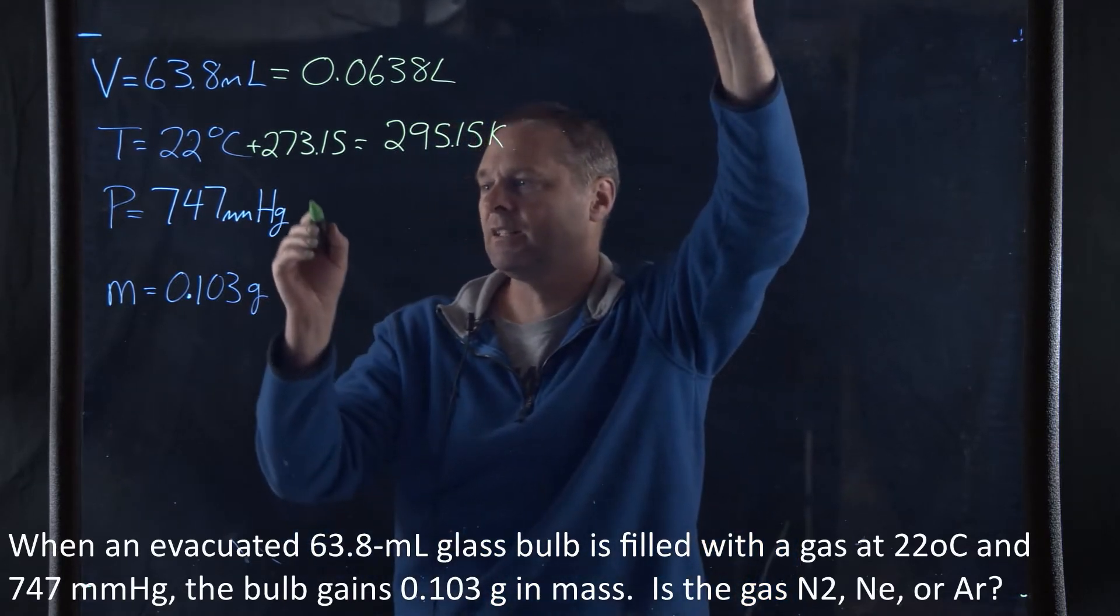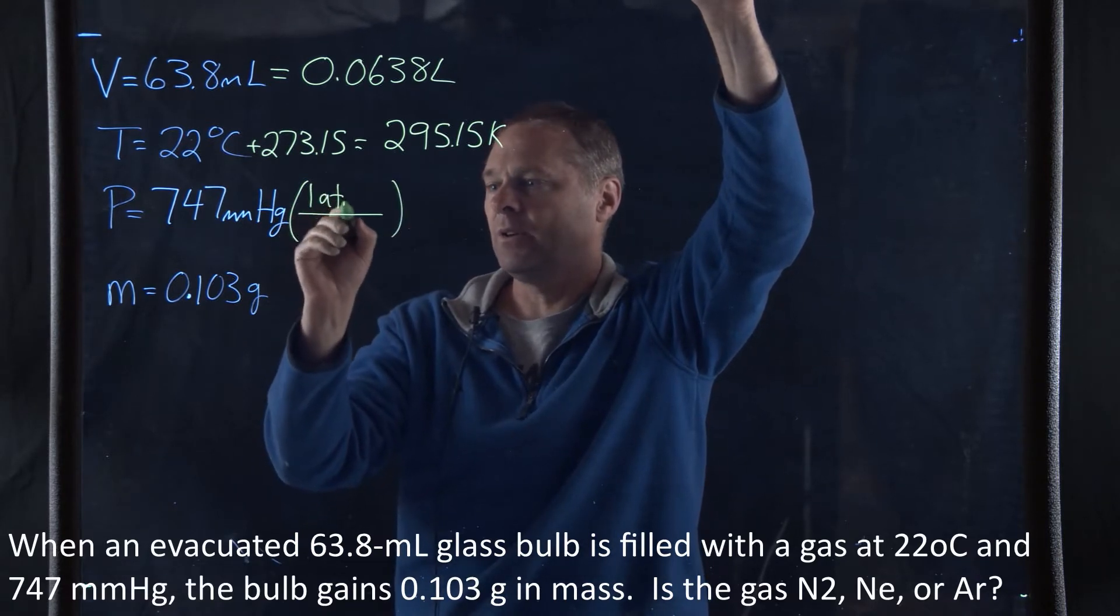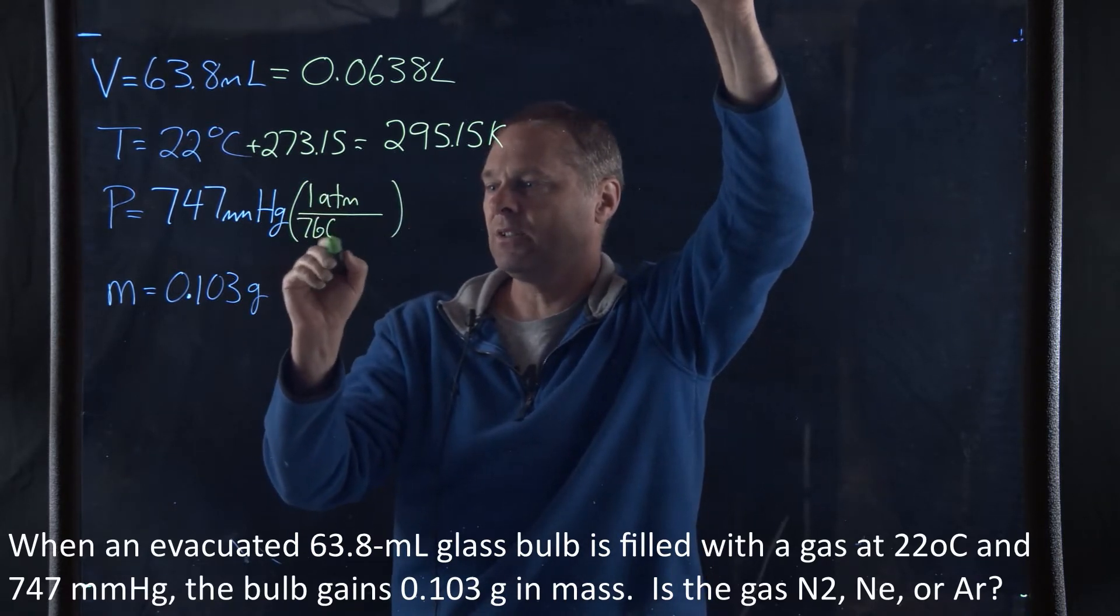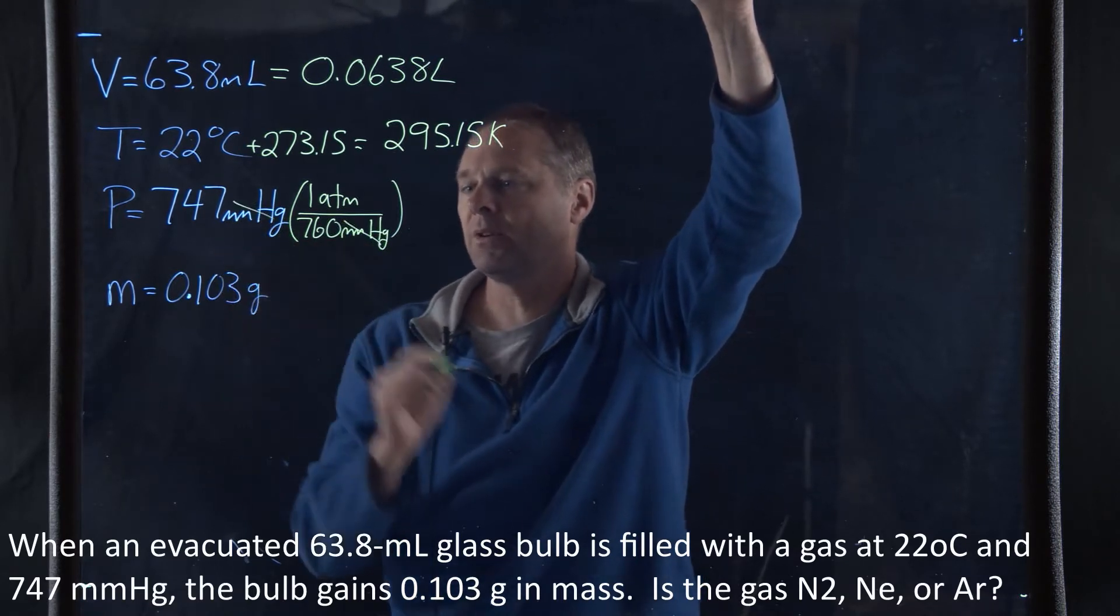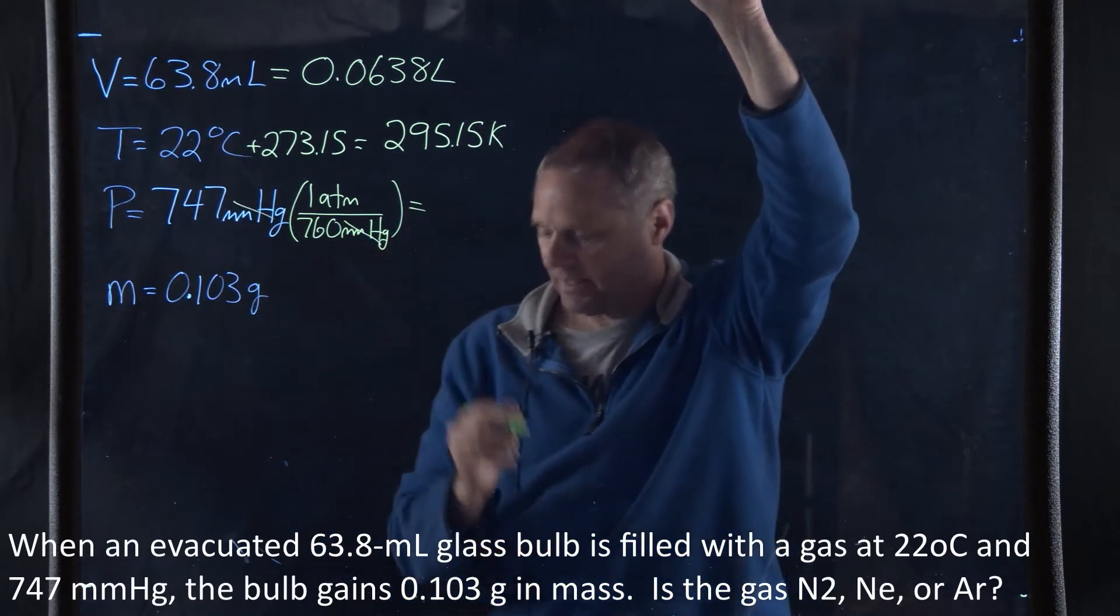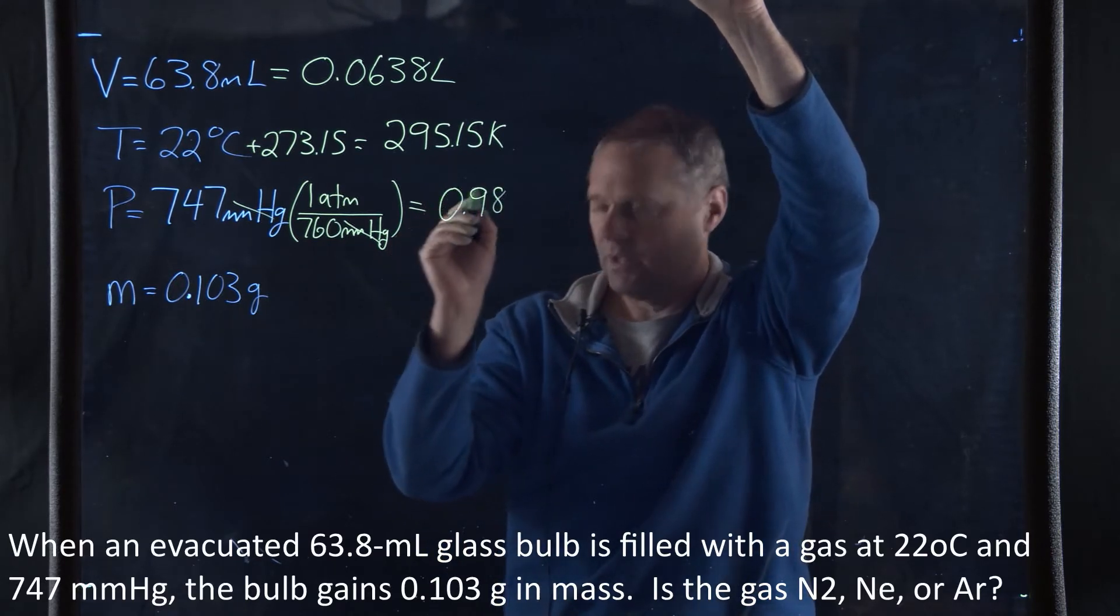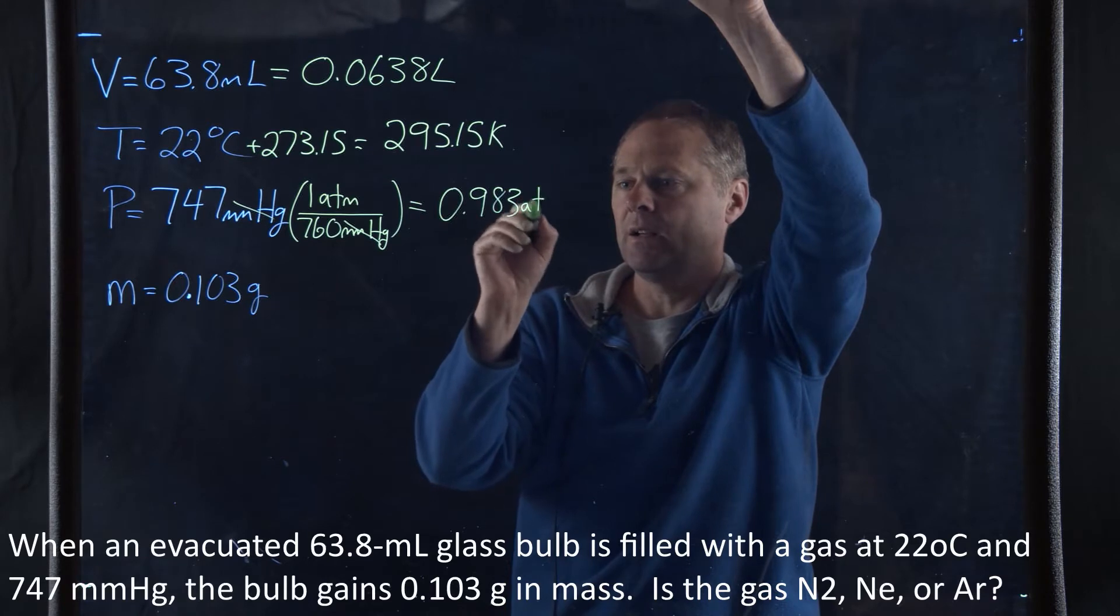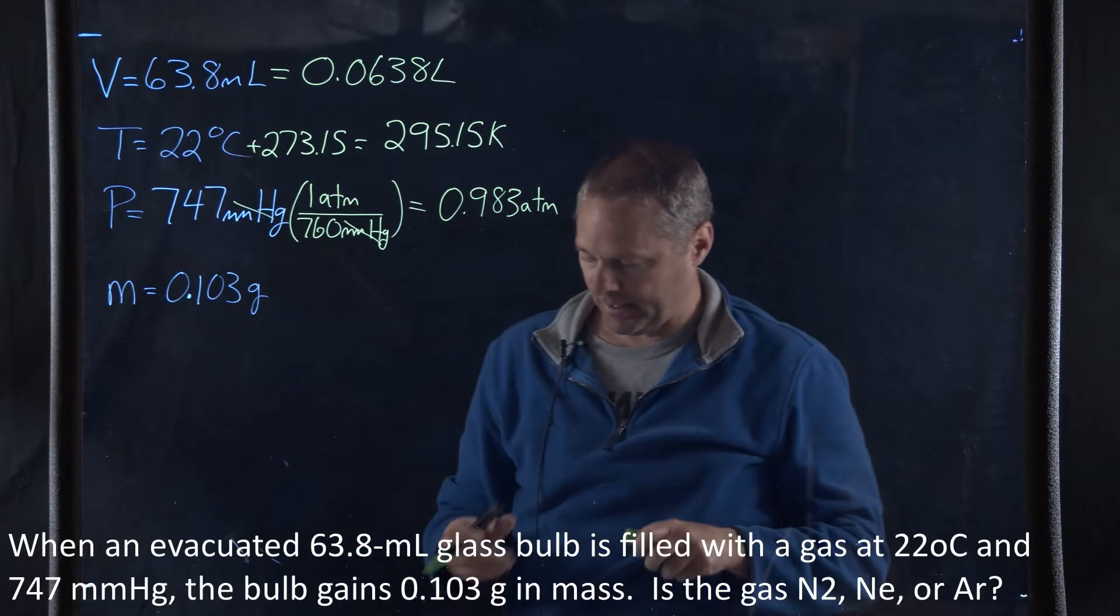Now, to convert this into atmospheres, one atmosphere is equal to 760 millimeters of mercury, so the millimeters of mercury cancel, and this gives us 0.983 atmospheres. And we're just going to leave this in terms of grams, that's perfectly fine.